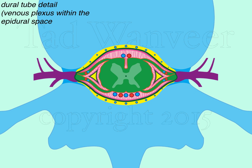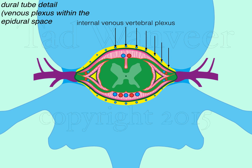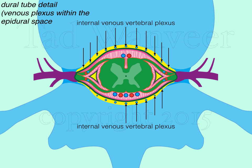Here we look at venous plexuses within the epidural space, still shown in yellow. The venous plexus within the epidural space is called the internal vertebral venous plexus, shown by small blue circles. These veins within the epidural space do not have valves, so changes in the epidural space — adverse strain — can cause venous congestion.